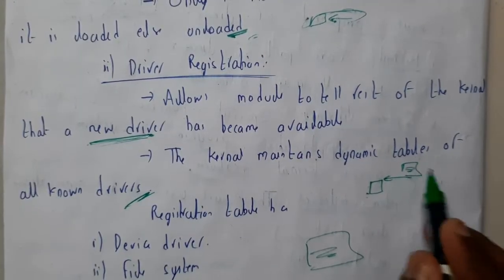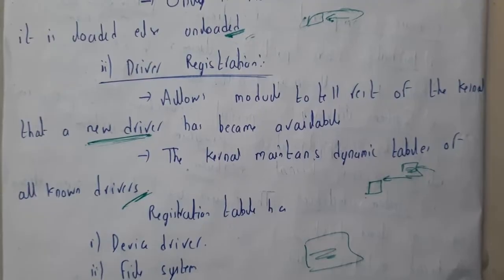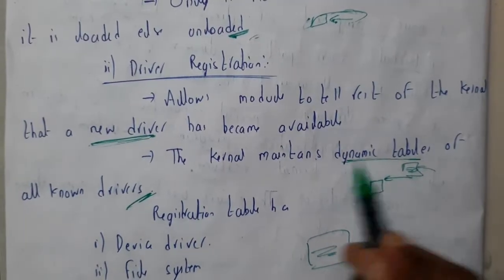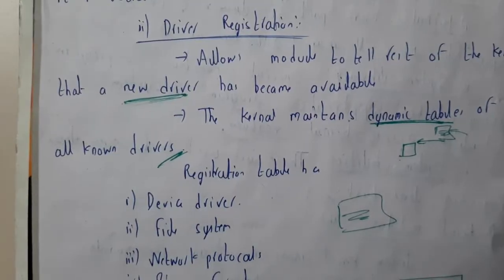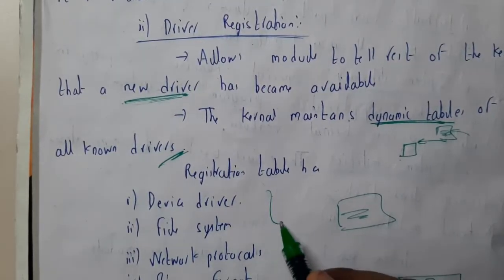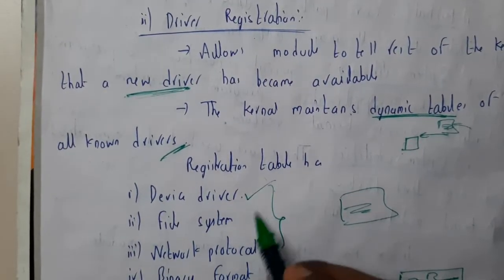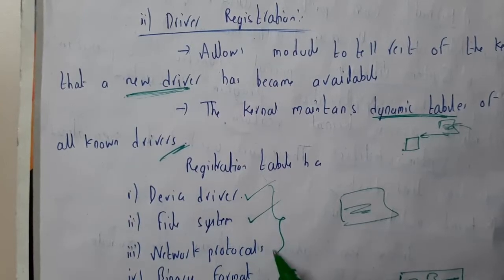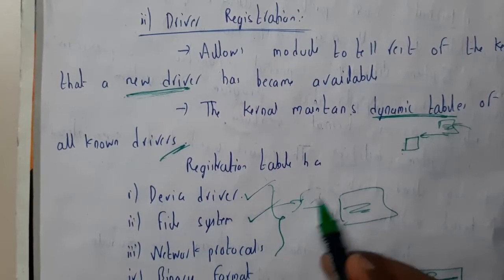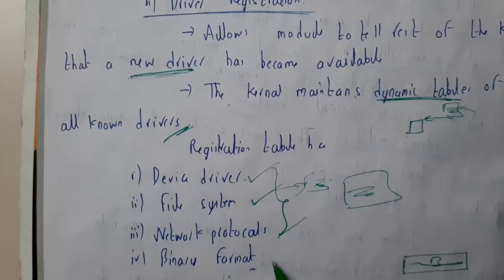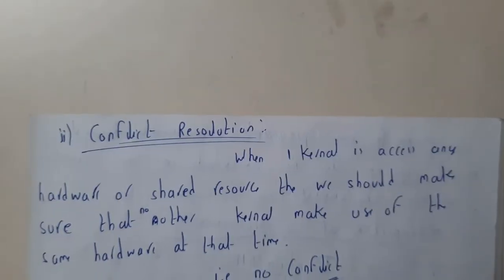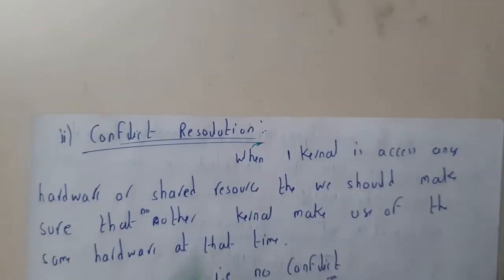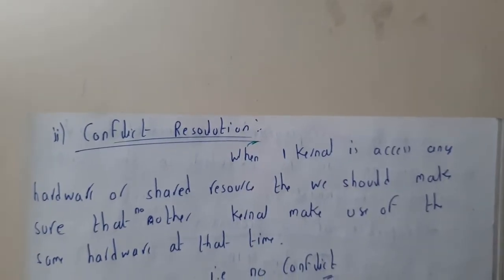The first time you insert a pen drive you get a driver installation prompt, but the second time it opens automatically within seconds — because the driver is already stored in the dynamic tables in the kernel. The table columns include device driver, file system, location of application files, network protocols, and binary format. Those are the few components of those tables.